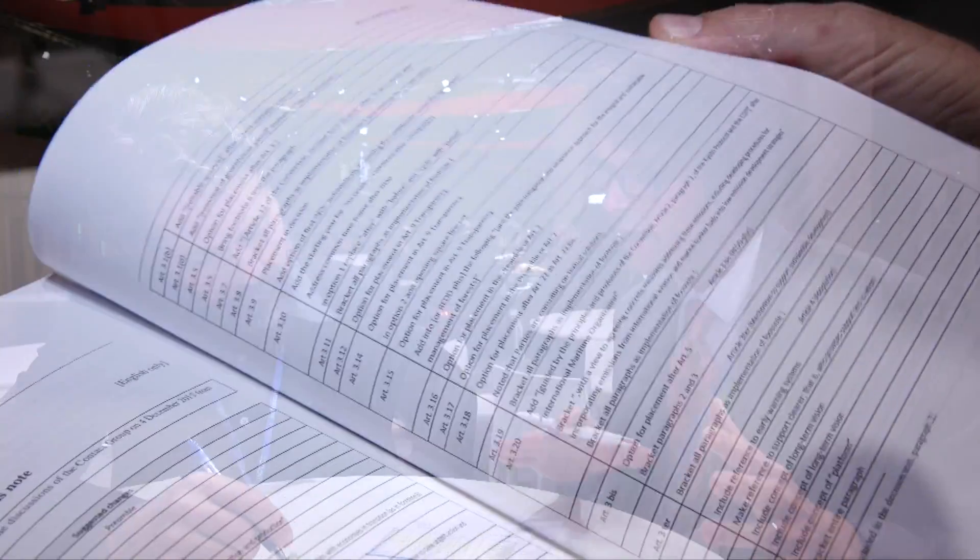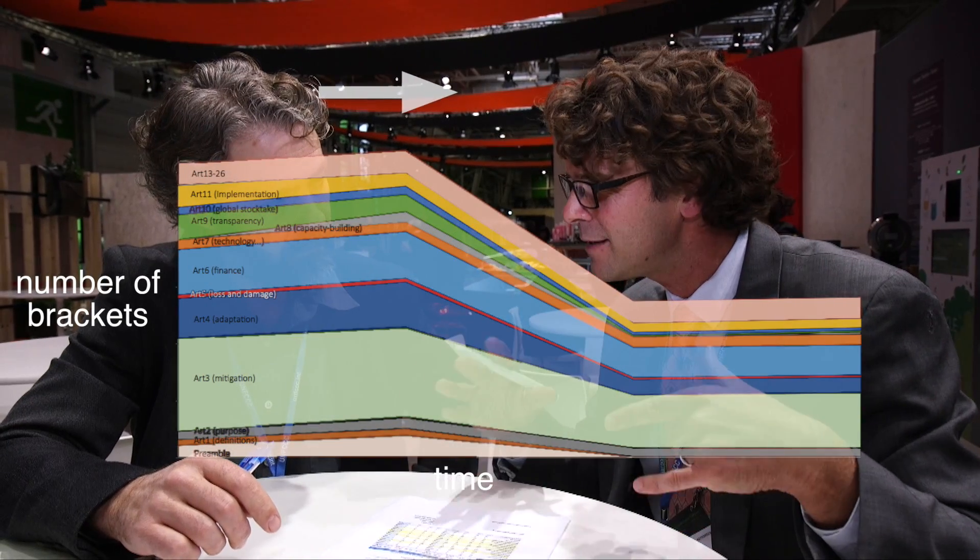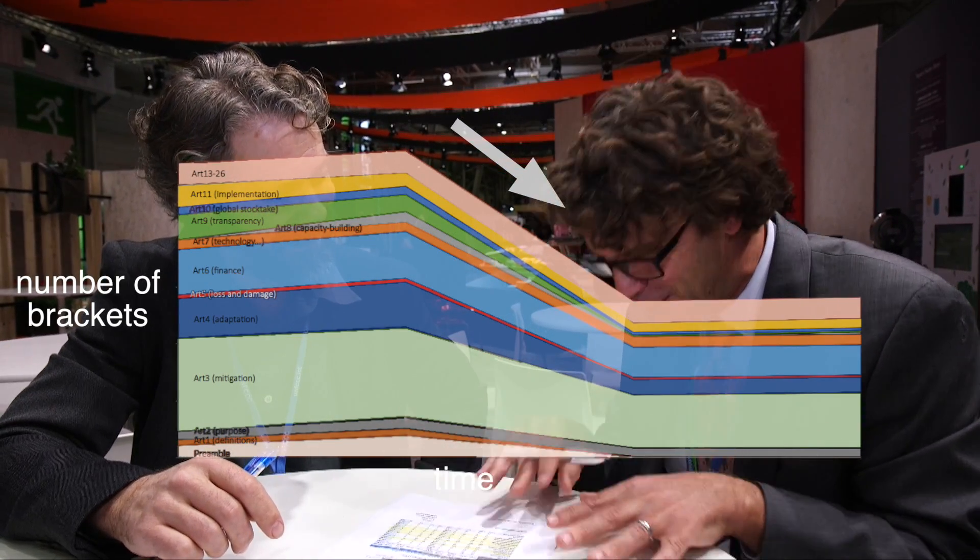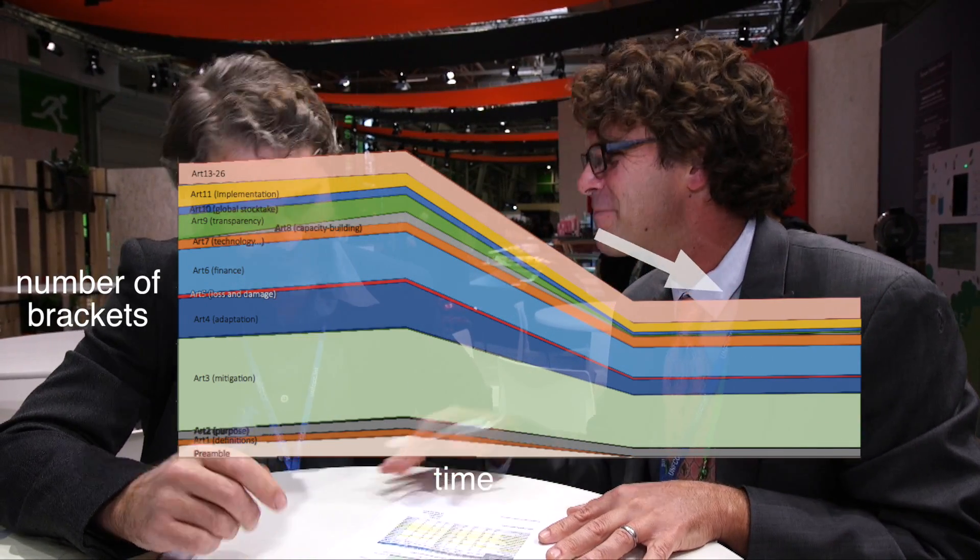What we do is look at both the agreement and the decisions and go through it article by article, paragraph by paragraph on the key topics, and we see how many options and brackets have been removed over the course of the past week of negotiations. The key thing to know is there's been some progress — there are some entire articles that are clean, and there's been a reduction in the number of options and brackets.